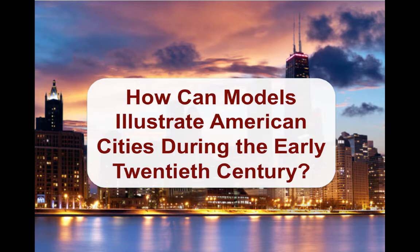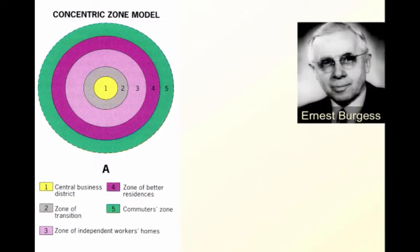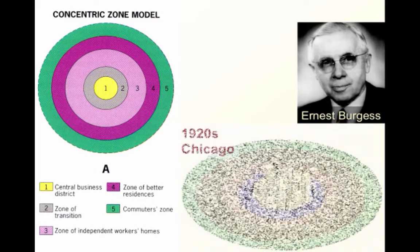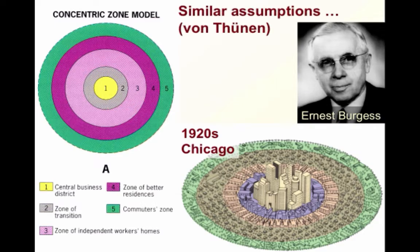Now let's take a look at some of the actual models you need to know. The first one is the concentric zone model, which was organized by Ernest Burgess back around the 1920s. He used Chicago as a model to understand how this whole thing works. And if you look at it, it looks identical to the von Thunen model. In fact, there are some very similar assumptions that he made as von Thunen made.